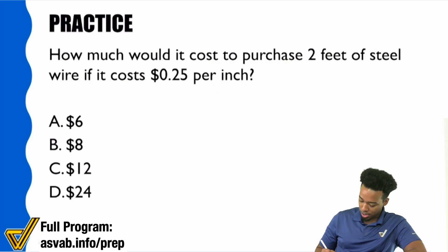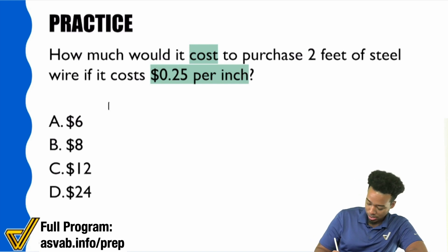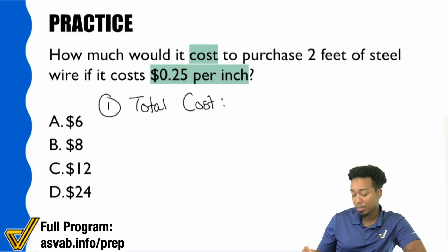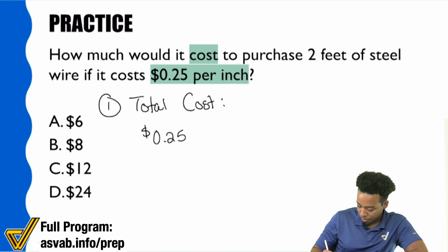So look right here immediately, if we want the cost and the cost is 25 cents per inch, here's what this means. We want total cost, and what that means is if we have 25 cents per inch, this means multiply by the inches.